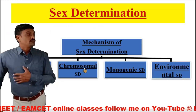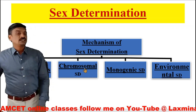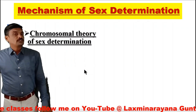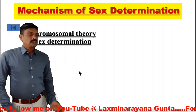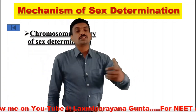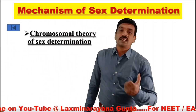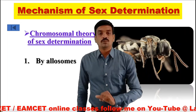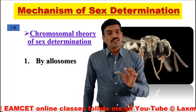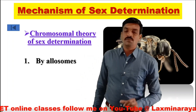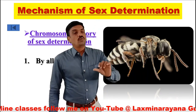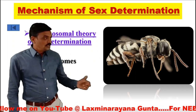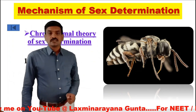The second mechanism of sex determination is chromosomal sex determination. This includes determination of sex by sex chromosomes, the allosomes. If a human has two X chromosomes, it is considered female. If a human has one X chromosome and one Y chromosome, then it is male.